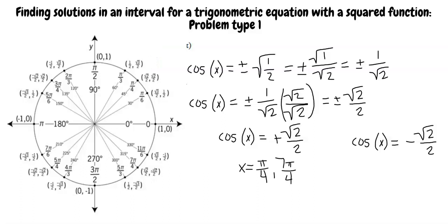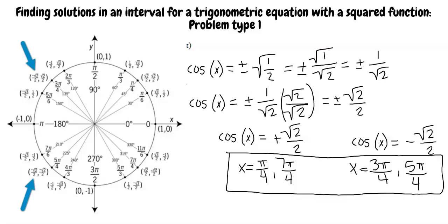Where on the unit circle does cosine of x equal negative square root of 2 over 2? I am going to use the same kind of reasoning that I used for finding x when the cosine of x was square root 2 over 2. I can see that the answers here are 3π over 4 and 5π over 4. Excellent work.